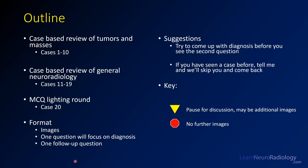For this review, we're going to do tumors and masses for the first 10 cases — so those first 10 are going to be all different types of tumors. Then we're going to do a little bit of general neuroradiology cases, and then we'll have a multiple choice lightning round at the very end.